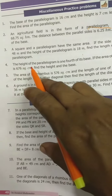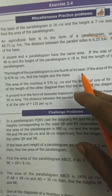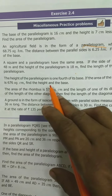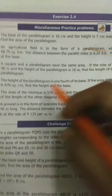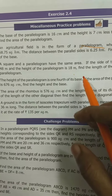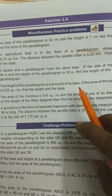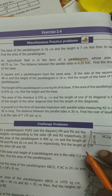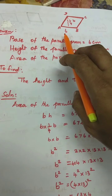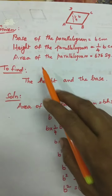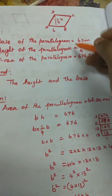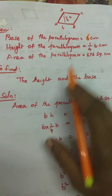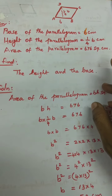The height of the parallelogram is one fourth of its base. If the area of the parallelogram is 676 square centimetres, find the height and base. Let base = b cm, so height = (1/4)b cm. Area of parallelogram = b × h = 676 square centimetres.